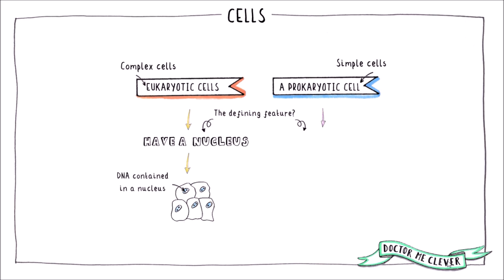The defining feature of a eukaryotic cell is the presence of a nucleus which contains the DNA that controls the cell's activities. In contrast, the defining feature of a prokaryotic cell is the absence of a nucleus. These cells still contain DNA, but the DNA is not held in by a nuclear membrane. It is free to float in the cytoplasm.